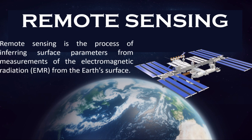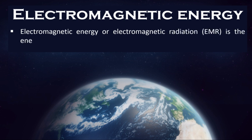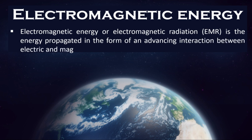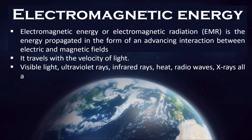Remote sensing is the process of inferring surface parameters from measurements of the electromagnetic radiation from the earth's surface. This electromagnetic radiation, or EMR, can either be reflected or emitted from the earth's surface. Electromagnetic energy is the energy propagated in the form of an advancing interaction between electric and magnetic fields. It travels with the velocity of light. Visible light, ultraviolet rays, infrared rays, heat, radio waves, and X-rays are all different forms of electromagnetic energy.